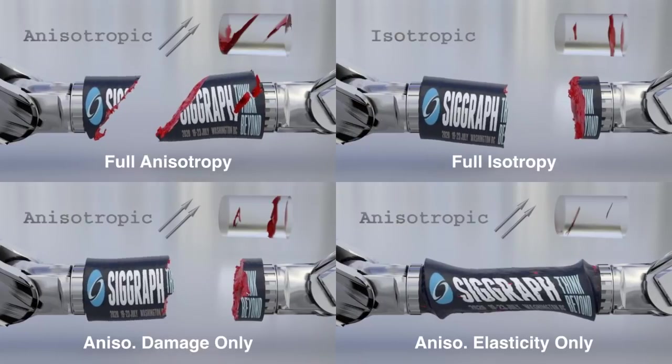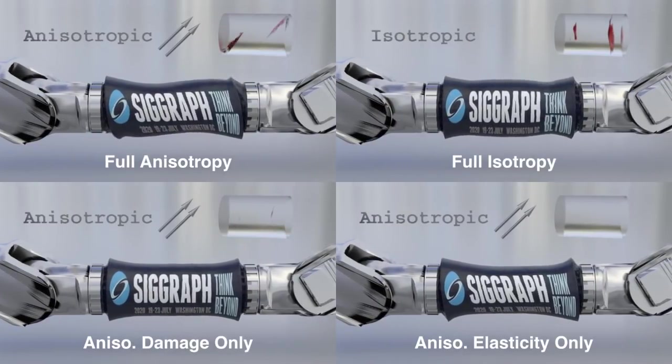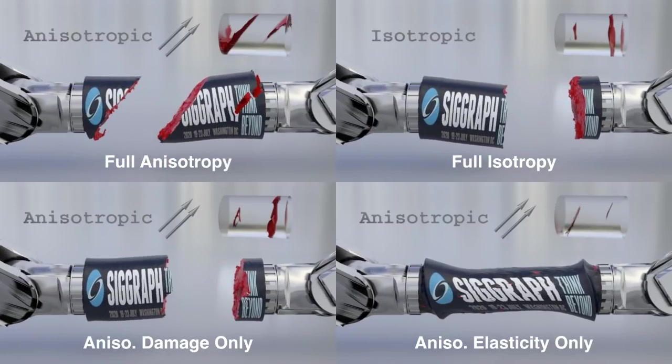Alternatively, a fully isotropic tube fails to produce this guided fracture. Additionally, using only one or the other also fails to produce the desired fracture.